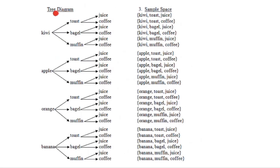A tree diagram is one way to organize this information. We begin by listing each of the four pieces of fruit, then pairing that fruit with each of the three pastry items, and then each of those pastry items can go with either juice or coffee. So one possible breakfast is kiwifruit, toast, juice — or kiwifruit, toast, coffee. We can also have kiwifruit, bagel, juice; kiwifruit, bagel, coffee; kiwifruit, muffin, juice; kiwifruit, muffin, coffee.